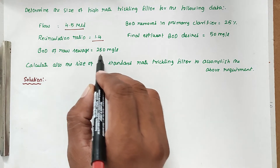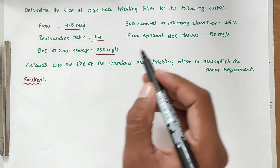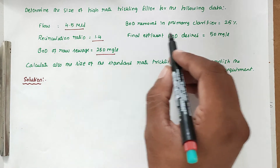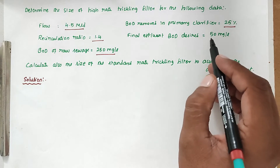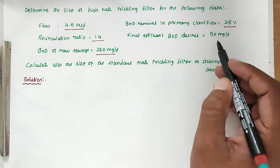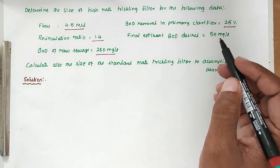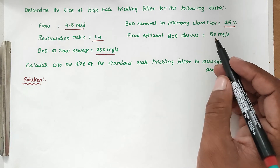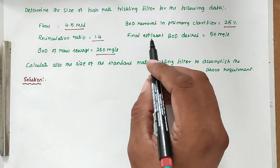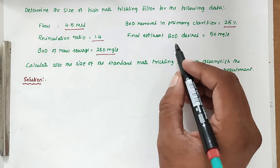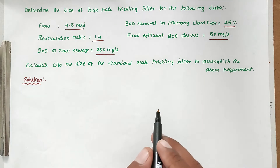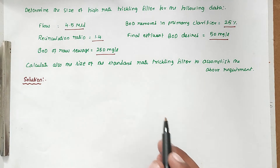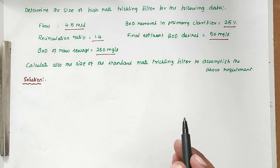The BOD of raw sewage is 250 milligrams per liter. The BOD removed in the primary clarifier is 25%, so 75% of BOD enters into the secondary clarifier, that is the high rate trickling filter. The final BOD desired is 50 milligrams per liter — so the final effluent contains a BOD of 50 mg/L.